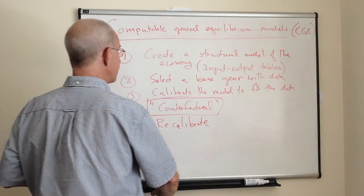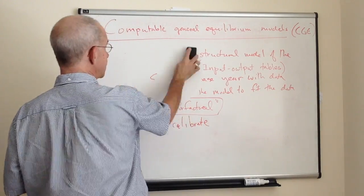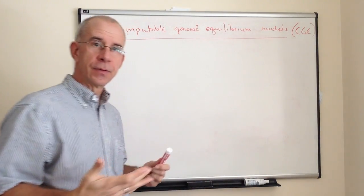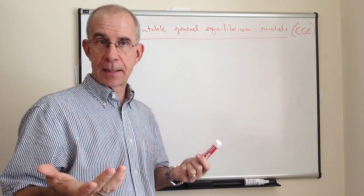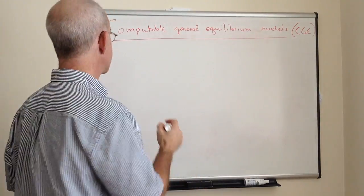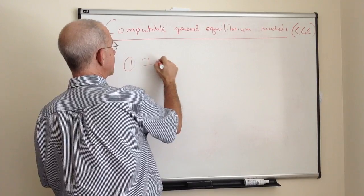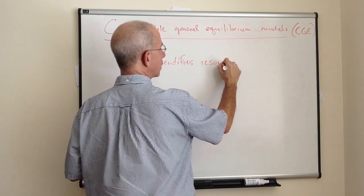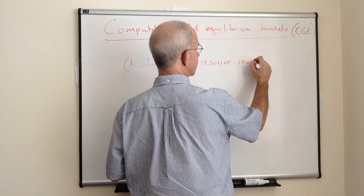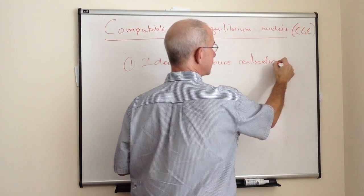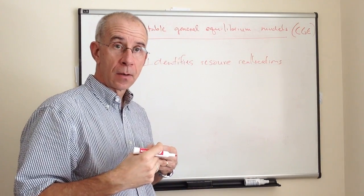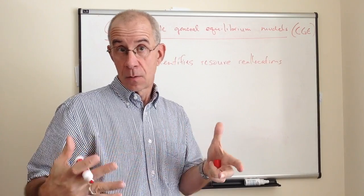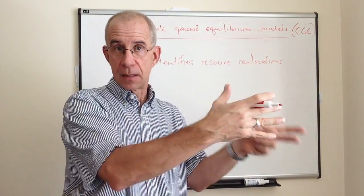There are a number of important features of a CGE model which make it particularly attractive to an economic analyst. One is that it identifies resource reallocations. That's a fancy way of saying that you can look at what industries expand and what industries contract, and what happens to employment in different sectors.